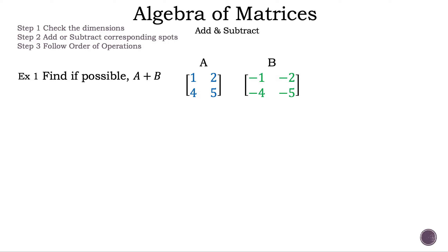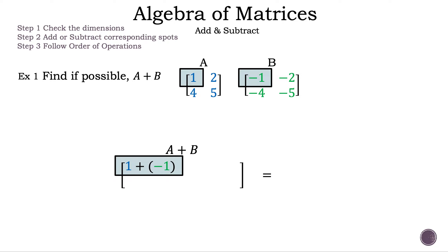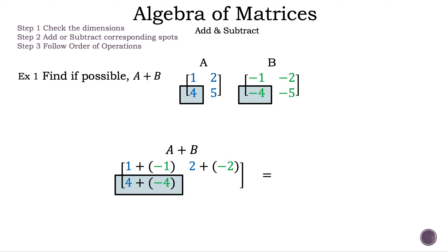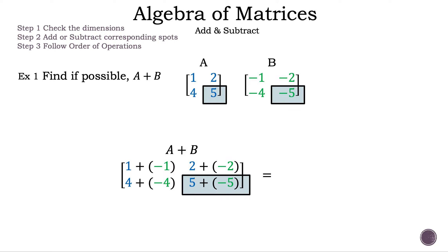Find, if possible, A plus B. Matrix A is a 2 by 2 with 1 and 2 in the first row and 4 and 5 in the second row. Matrix B is also a 2 by 2 with negative 1 and negative 2 in the first row and negative 4 and negative 5 in the second row. The first elements we add are row 1, column 1: 1 plus negative 1. Then row 1, column 2: 2 plus negative 2. Then row 2, column 1: 4 plus negative 4. And last, row 2, column 2: 5 plus negative 5.